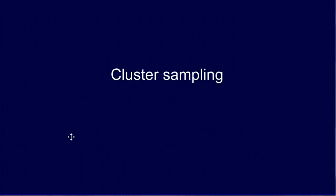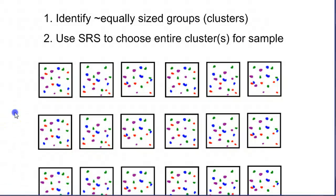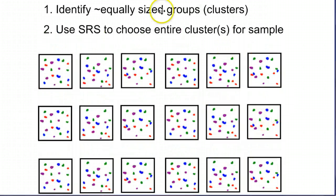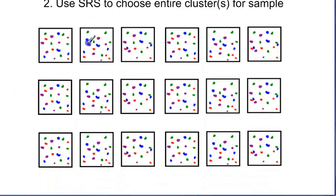One very simple but potentially dangerous method of sampling is called cluster sampling. Imagine that you have a bunch of individuals represented by each of these different dots here, spread around a bunch of boxes or groups. We call each of these groups clusters. It's important that each of these groups is roughly the same size and that each of them is well mixed, so the makeup of each group looks very similar to the others — pretty well mixed groups.